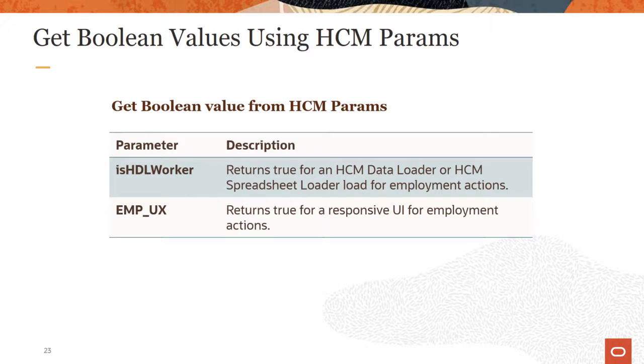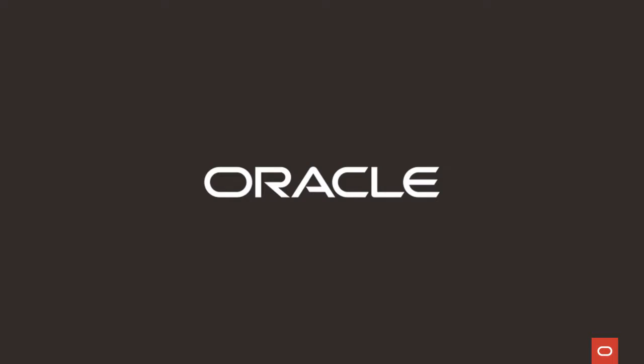You can use the get boolean value from HCM params for employment actions that return true for data either loaded through the HCM data or spreadsheet loaders or data entered in a responsive UI. This concludes the description of variables and functions used in autocomplete rules.